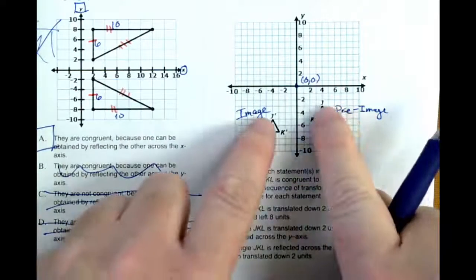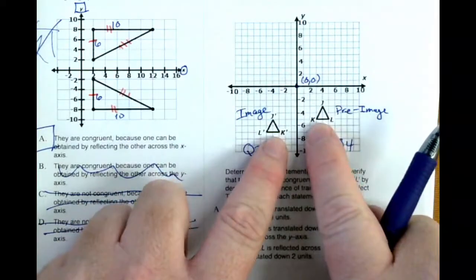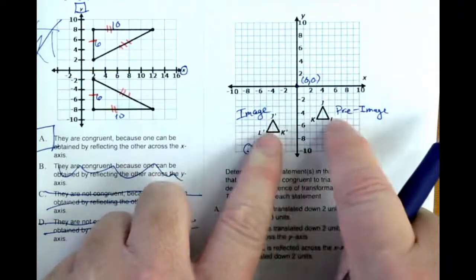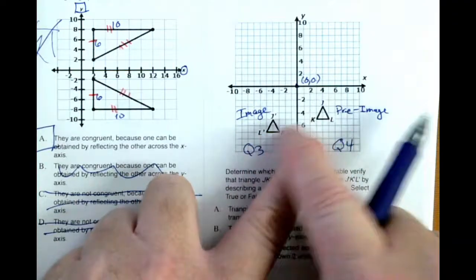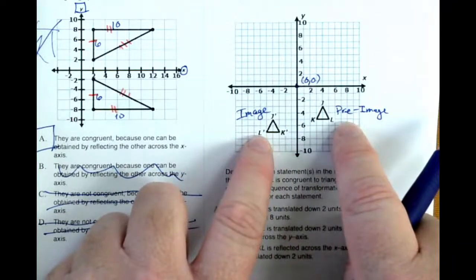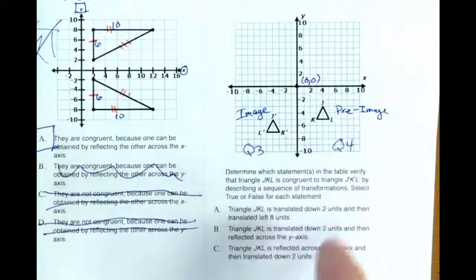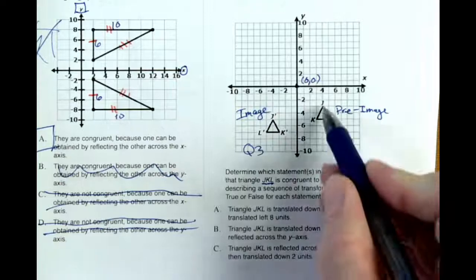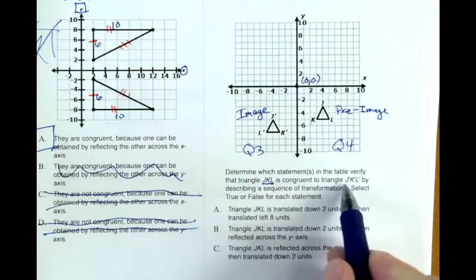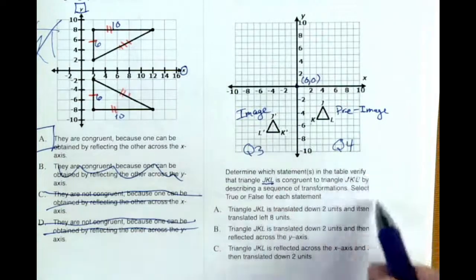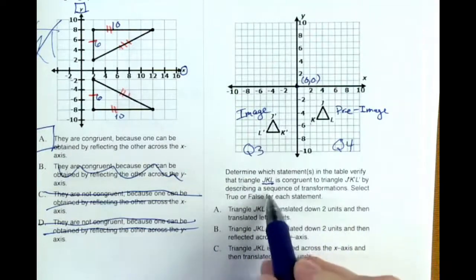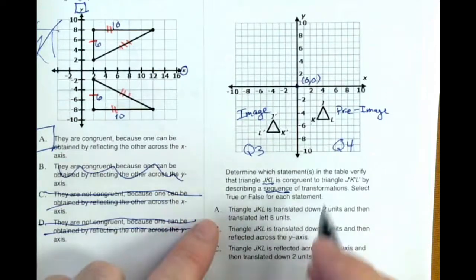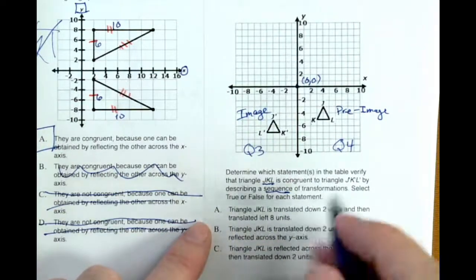The orientation, the j's are in the same position. But look at the k's. The k's are in flip-flop position. So it's likely that either a rotation or a reflection has happened. And then l is also kind of a mirror image. So which statement in the table verify that triangle jkl is congruent to j prime, k prime, l prime? By describing a sequence of transformations, select true or false for each statement. Okay. So I'll write a t or an f for each one.